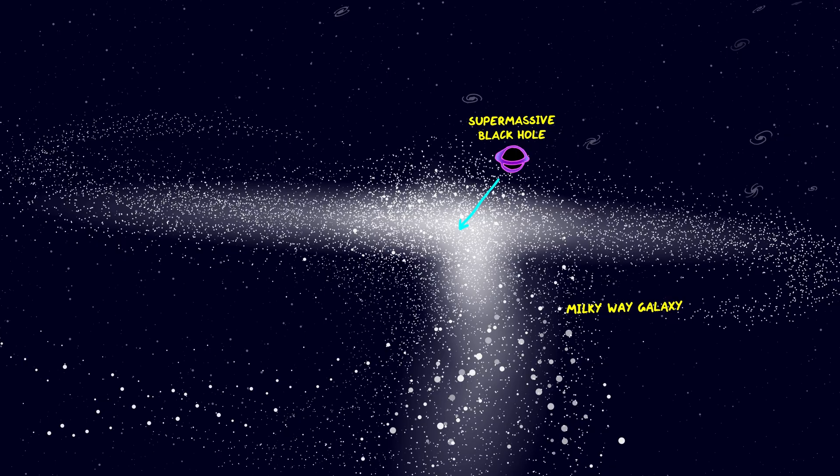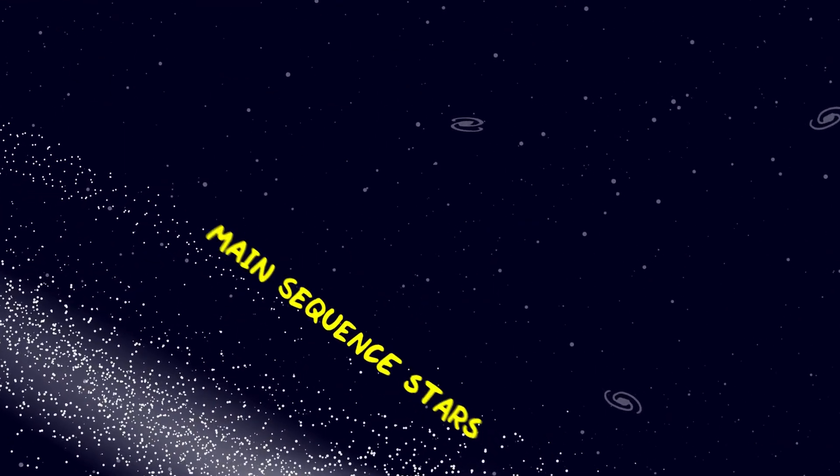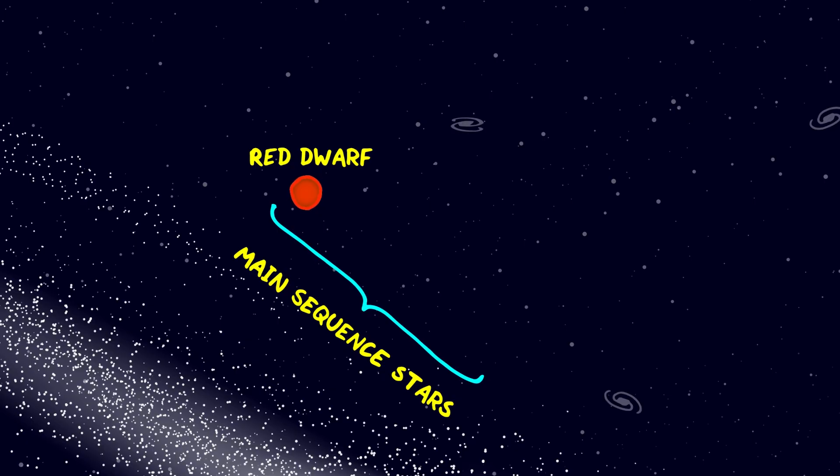We think there's probably a supermassive black hole at the center of every galaxy and they can have masses of up to a billion times that of our Sun. When we look up into the night sky most of what we see are stars, and there are many different kinds of stars in the galaxy. 95% of stars are main sequence stars which break down into red dwarf, orange dwarf and yellow dwarf stars.